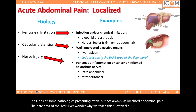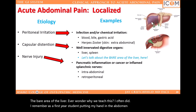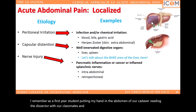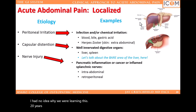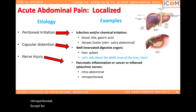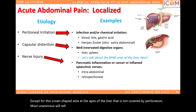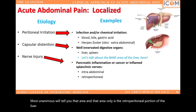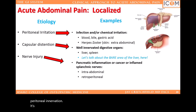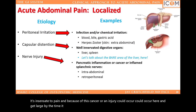The bare area of the liver — ever wonder why we teach this? I remember as a first-year student putting my hand in the abdomen of our cadaver and feeling, but not seeing, the bare area of the liver. Twenty years later, I know. The bare area of the liver creates an argument that the liver is retroperitoneal, except for this crown-shaped area at the apex of the liver that is not covered by peritoneum. That area only is the retroperitoneal portion of the liver. The liver is intra-abdominal, but the bare area has no visceral or parietal peritoneal innervation — it's insensate to pain. Because of this, cancer or an injury could occur here and get large by the time it grows large enough to stimulate the surrounding visceral peritoneum.